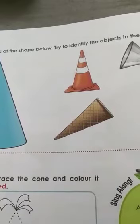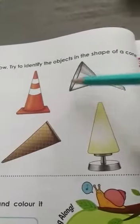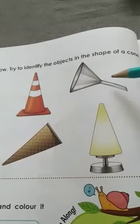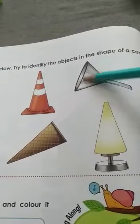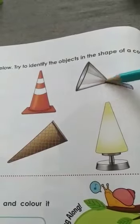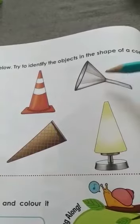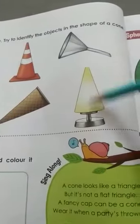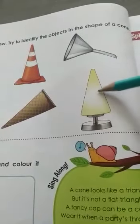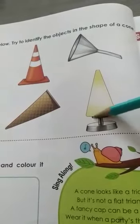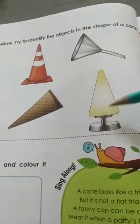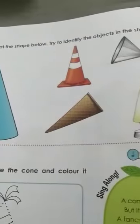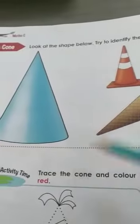Here you have a funnel. A funnel is used to pour oil into bottles. This part of the funnel is having a cone shape. And here you have a night lamp — this part of the lamp is also cone shape. So all these are having cone shape and it is a 3D shape.